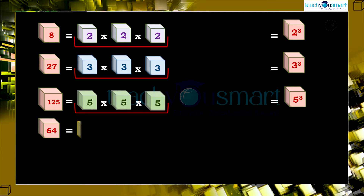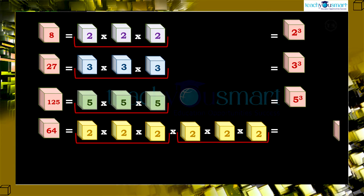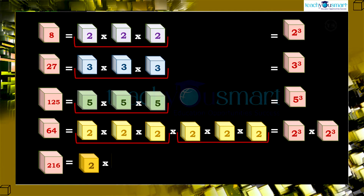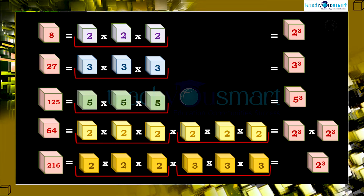64 = 2 × 2 × 2 × 2 × 2 × 2 = 2³ × 2³. 216 = 2 × 2 × 2 × 3 × 3 × 3 = 2³ × 3³.